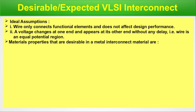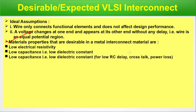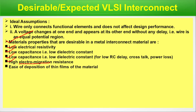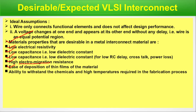There are a list of desirable properties of interconnects: low electrical resistivity, low capacitance (that is low dielectric constant) for low RC delay, crosstalk, and power loss. High electromigration resistance — electromigration is a reliability issue that can lead to chip failure. Ease of deposition of thin films of the materials, and ability to withstand the chemical and high temperatures required in the fabrication process. Stable contact structure — there should not be any chemical reaction with the material to which the metal connects.